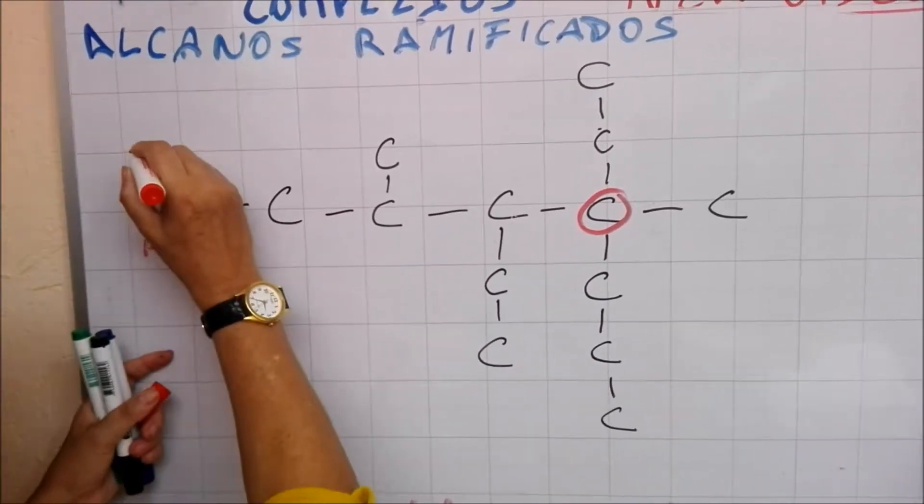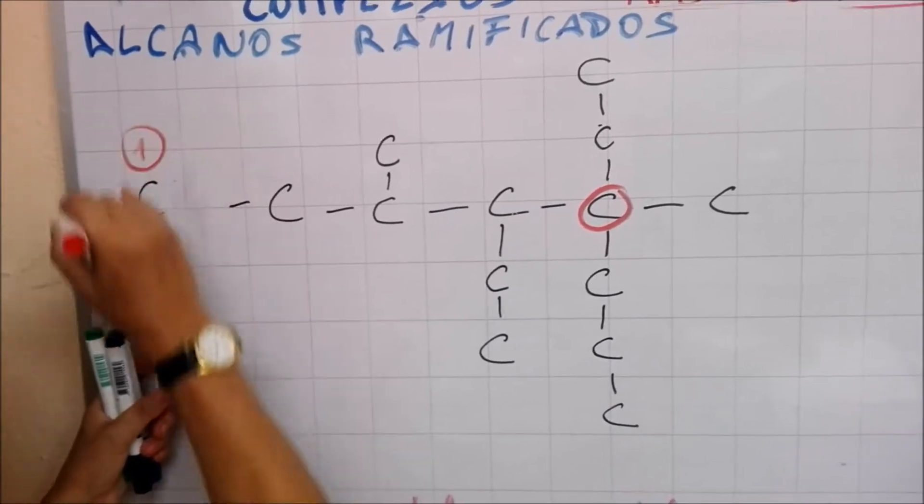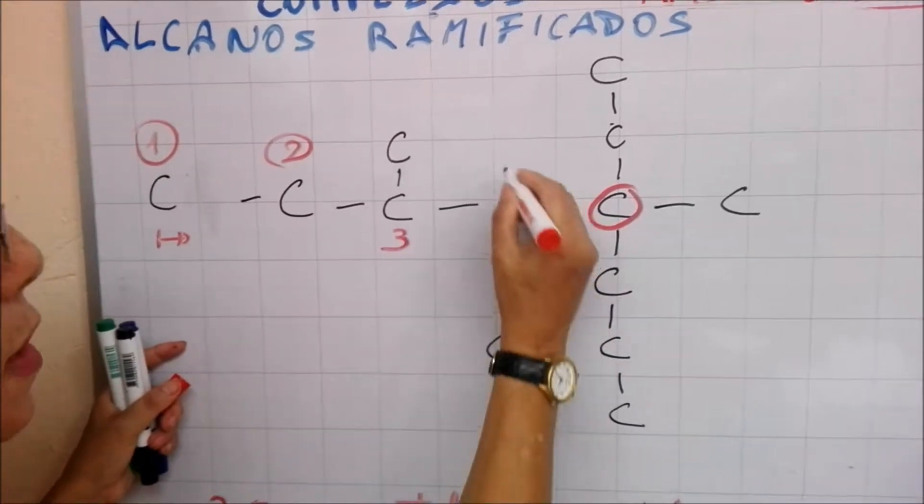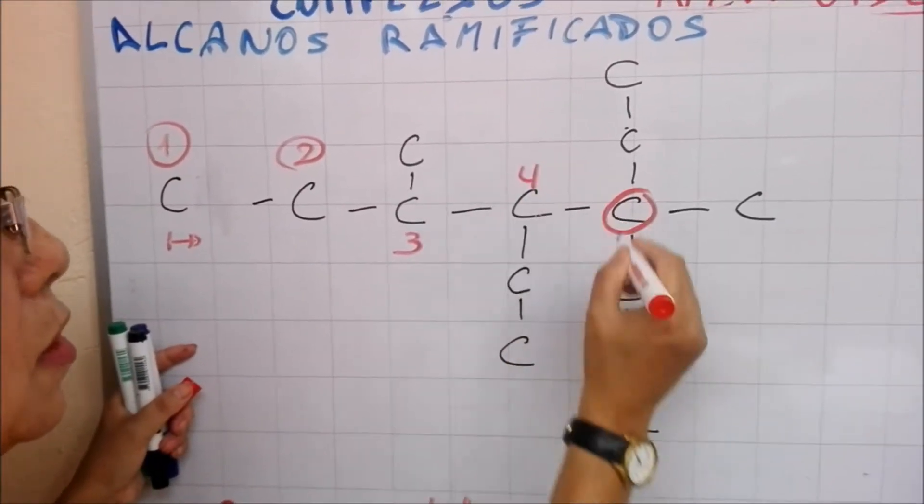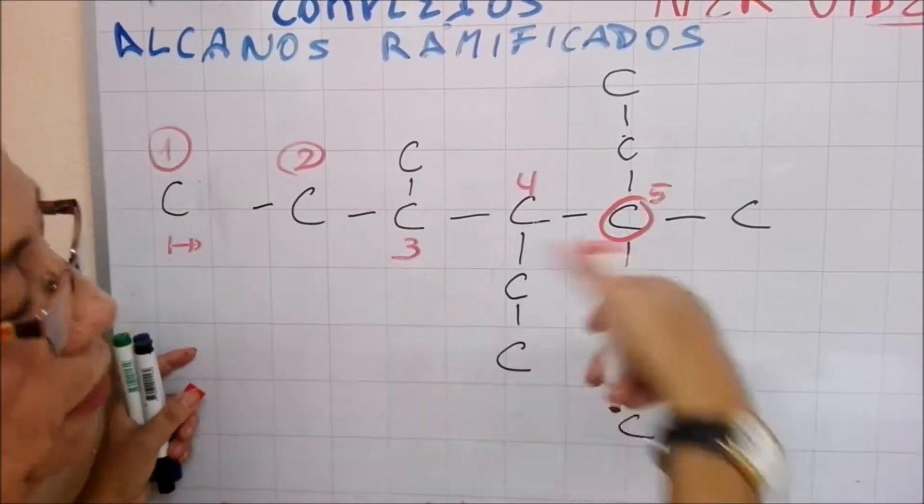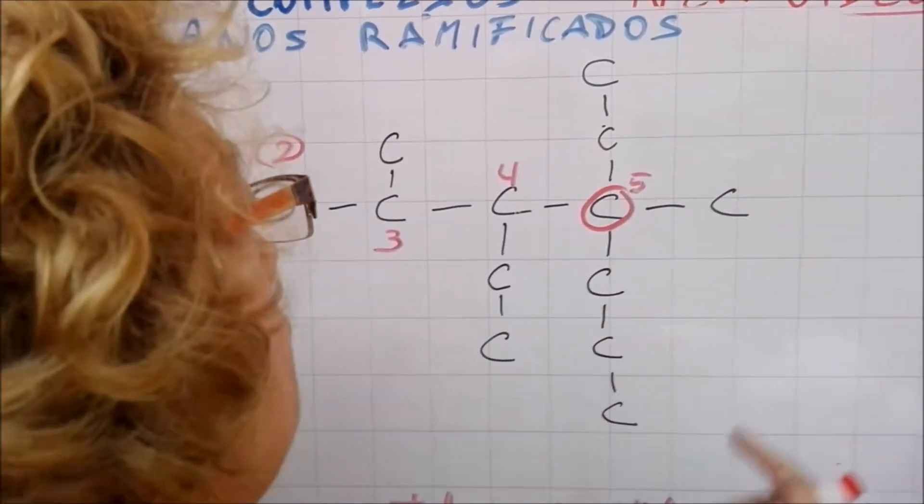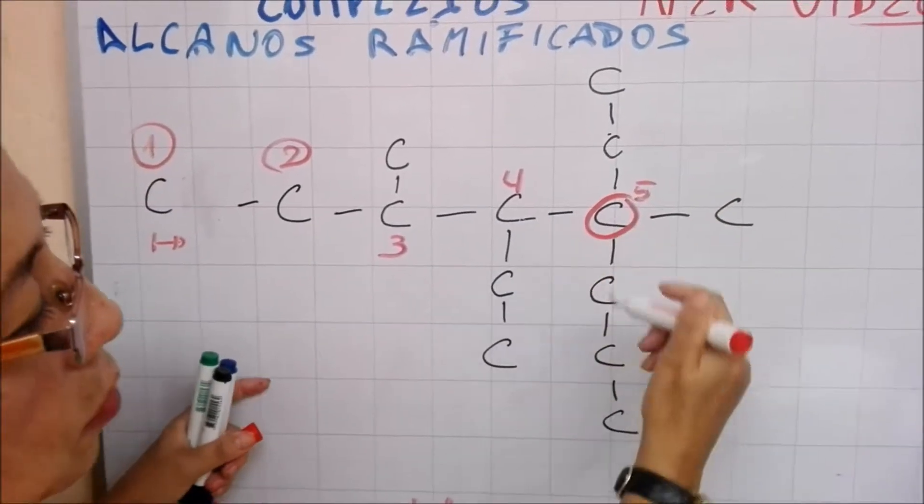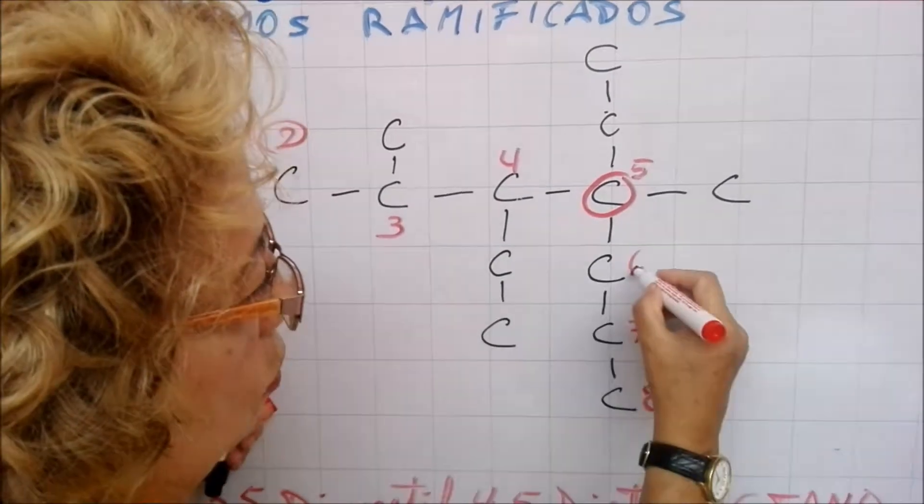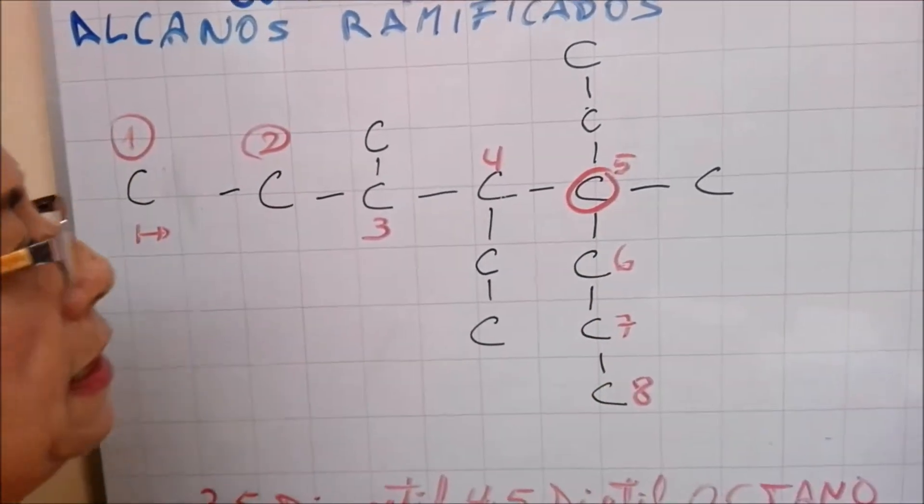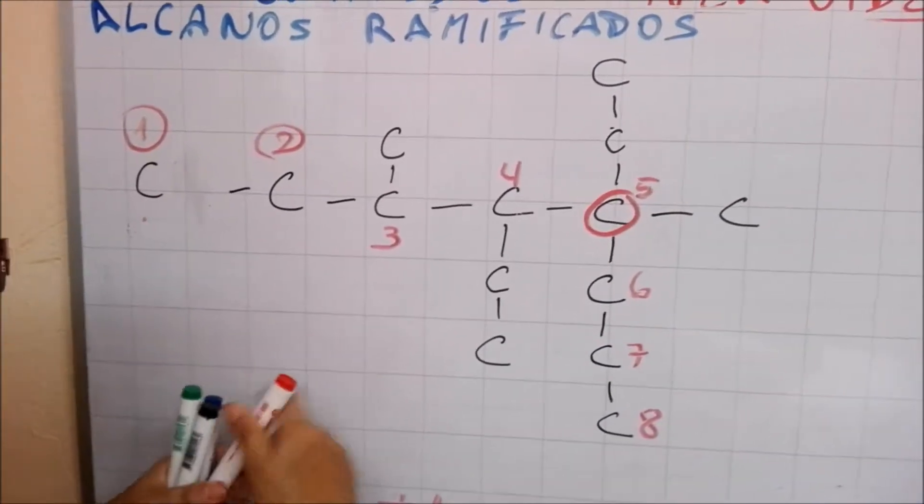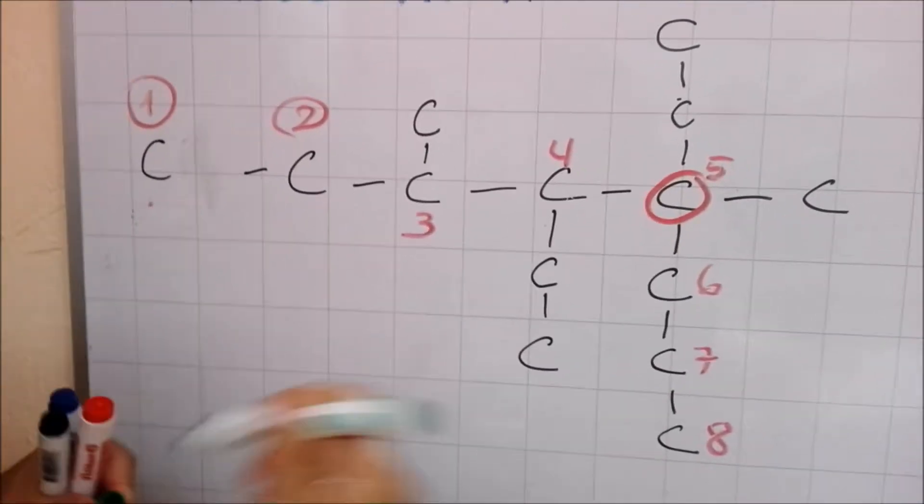Entonces como acá tengo más números, yo comienzo diciendo este va a ser mi carbono uno, mi carbono dos, mi carbono tres, mi carbono cuatro. Este que estaba aquí que lo puse como centro para cumplir con cualquier duda que tuvieras, este es el que sería el carbono cinco, este el carbono seis, carbono siete y carbono ocho.